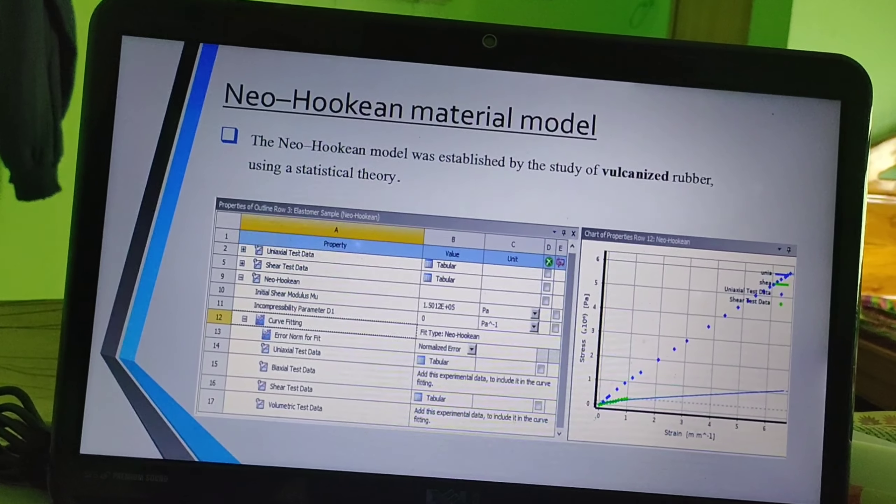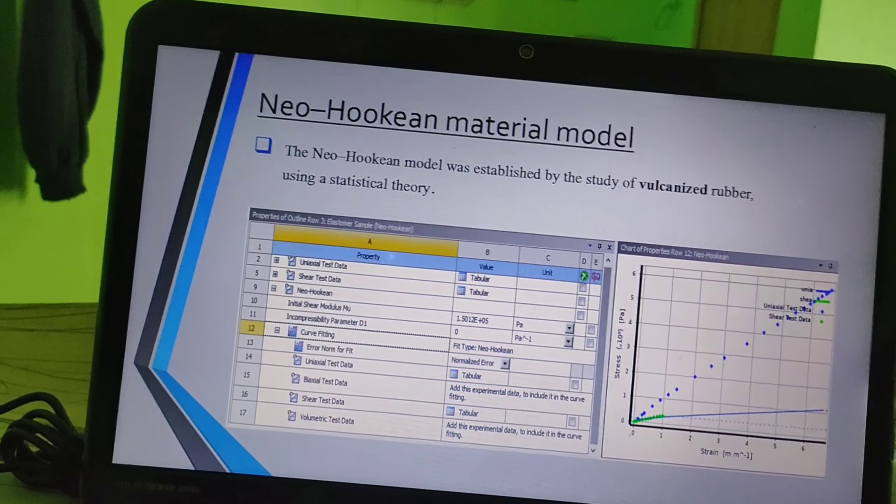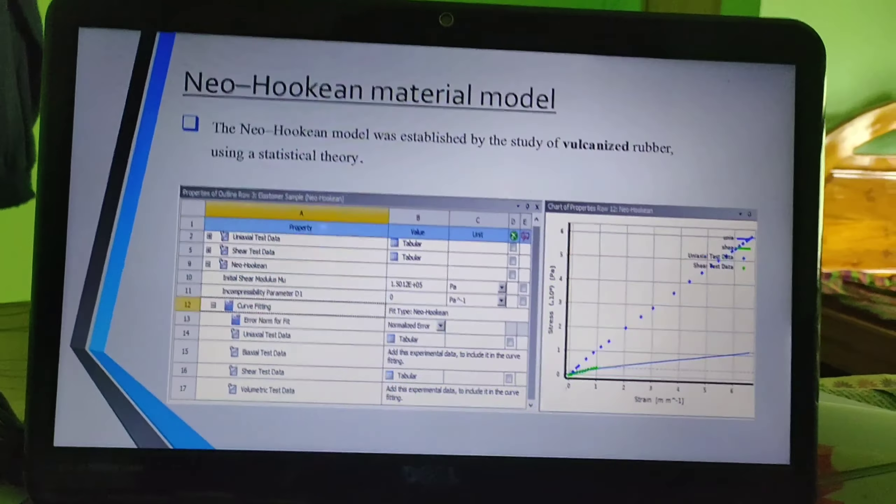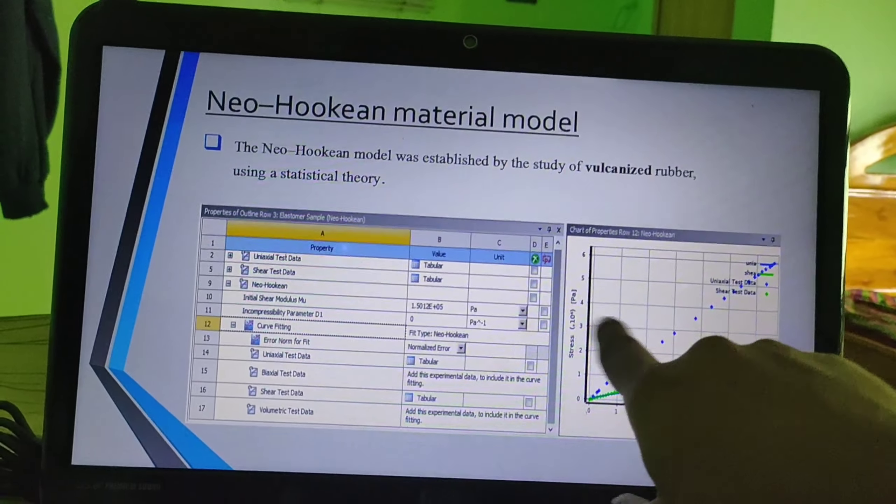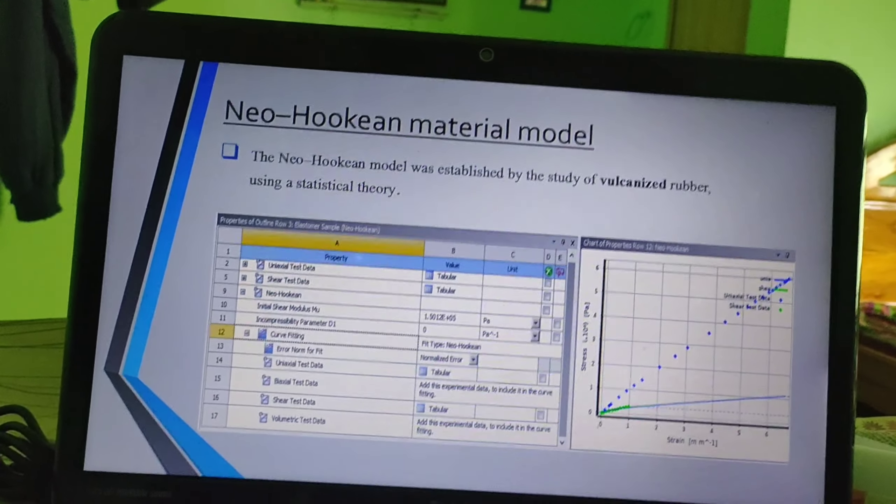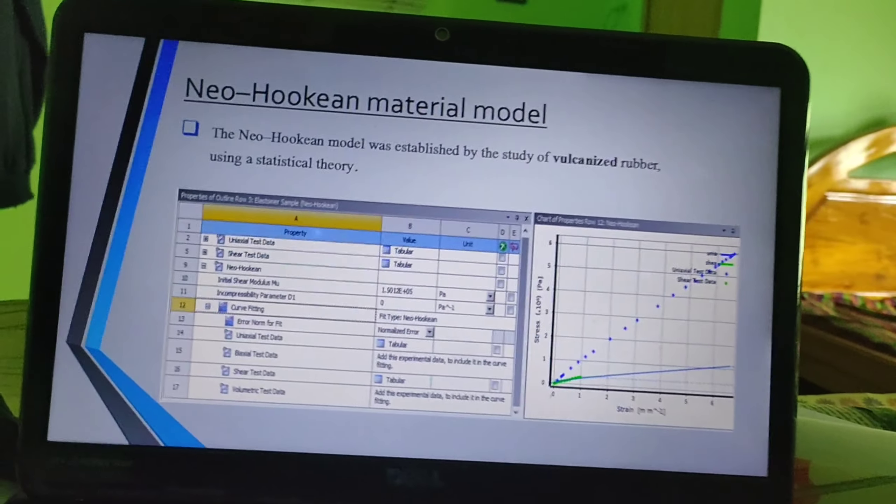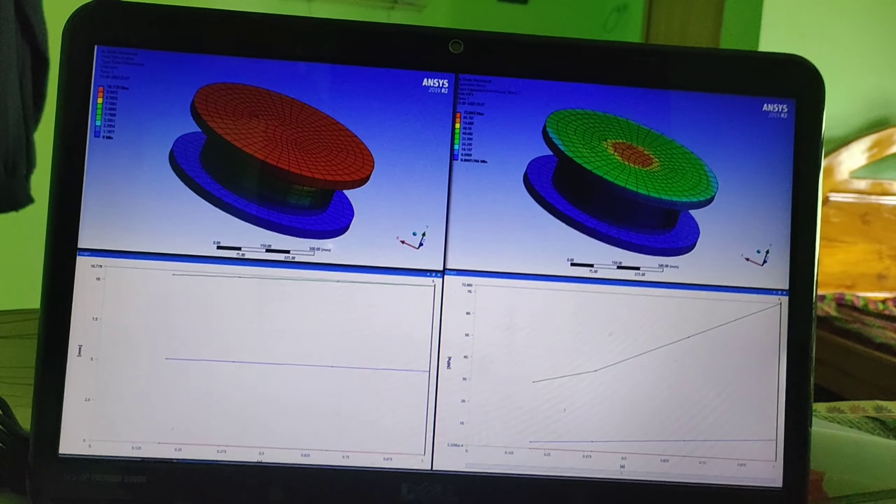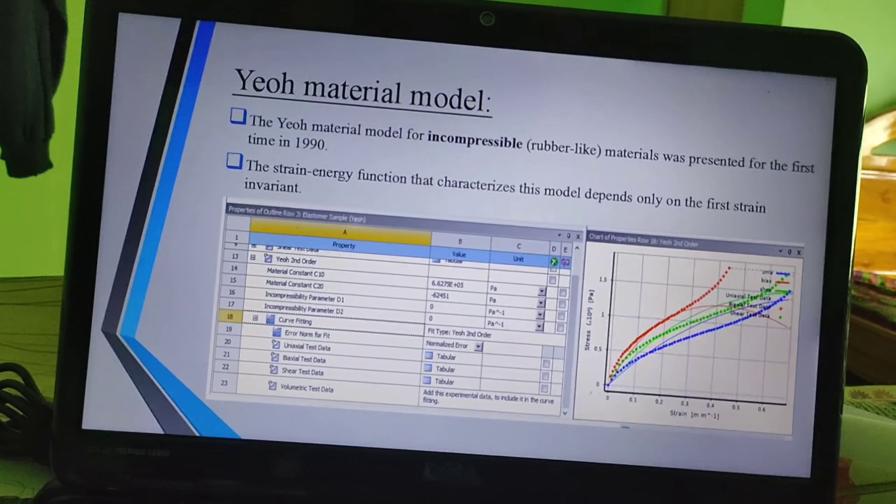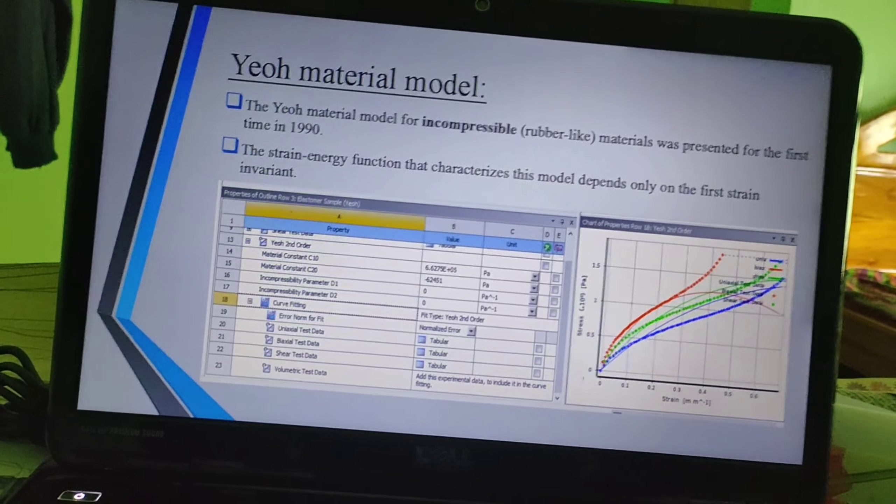This is the Neo-Hookean model. Neo-Hookean model gives the study of vulcanized rubber. Vulcanized rubber means hardened rubber. The more particles of hardened rubber pieces are settled in place. And this is the outline parameters for Neo-Hookean, stress strain graph. These are the parameters and the materials used like initial strain modulus and coefficient, etc. These are the structural and stress strain graph. In Neo-Hookean model, it gives the incompressible, rubber-like materials. And these are the stress strain graph.